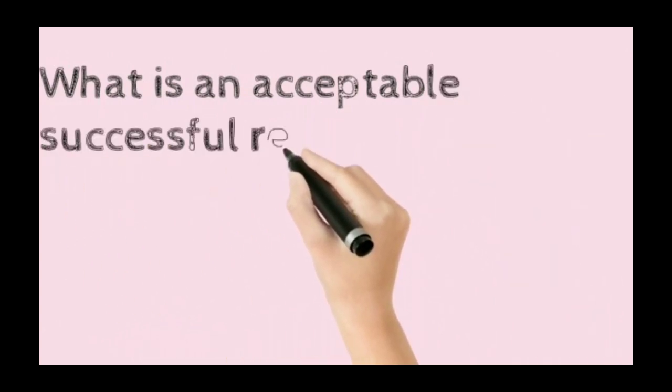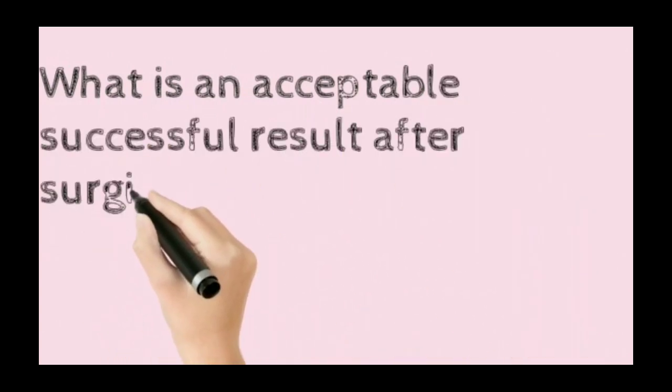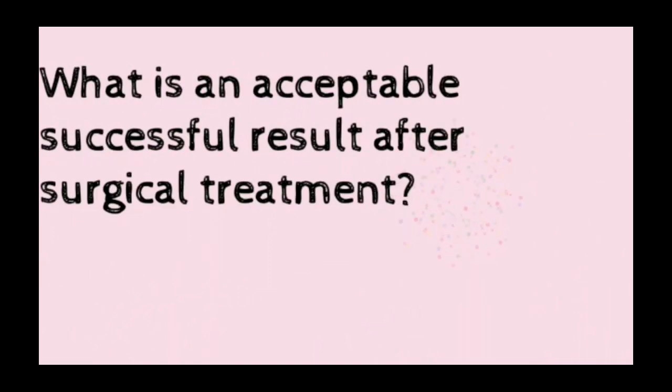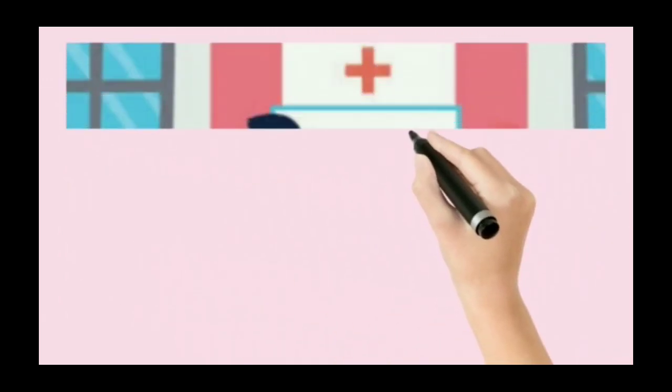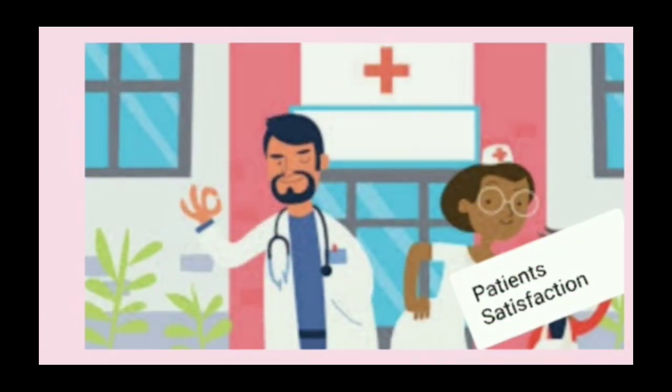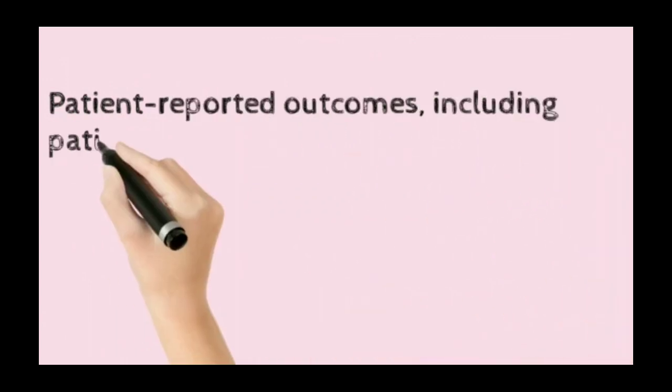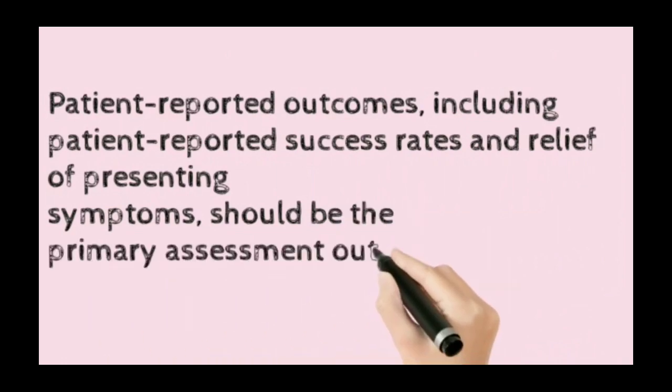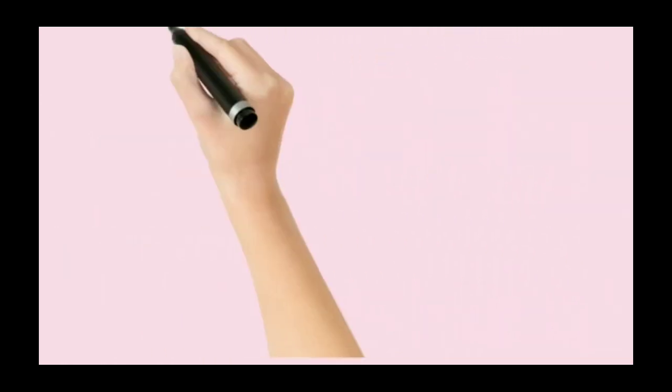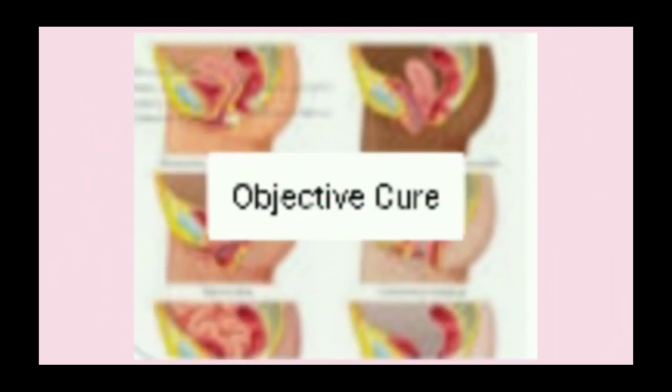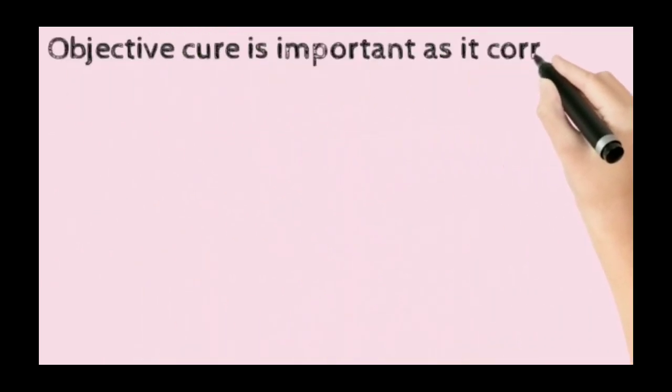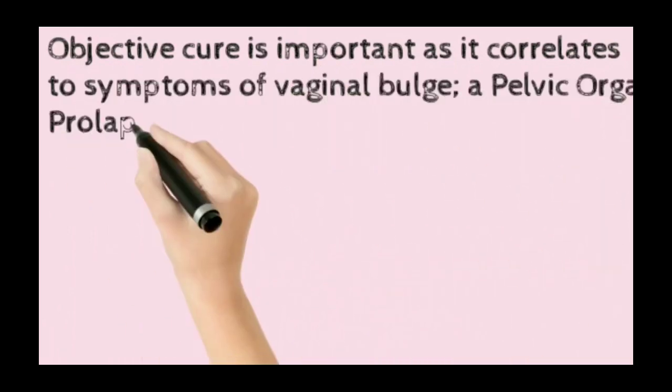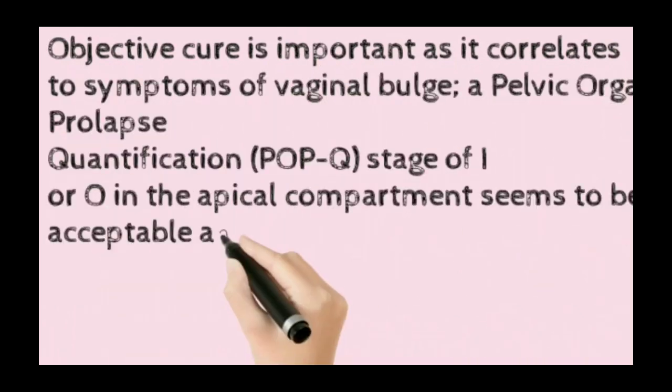What is an acceptable successful result after surgical treatment? That is important. We should know about this. It's written that patient satisfaction is very important. Patient-reported outcomes including patient-reported success rate and relief of presenting symptoms should be the primary assessment outcome. So there should be a specific objective cure. Objective cure is important as it correlates with symptoms of vaginal bulge. POP-Q stage 1 or 0 in the apical compartment seems to be accepted and widely used.